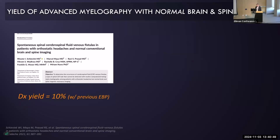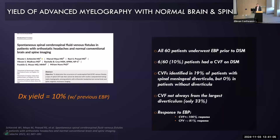Dr. Sheving gave a nice overview of this. A paper from 2021 in Headache found a 10% yield of CSF venous fistulas in patients who had negative brain and spine imaging. All of those patients had undergone epidural blood patch prior to their DSM. In patients who had diverticula, 19% had a venous fistula versus 0% without. The fistula was not always from the largest diverticulum — only about a third of the time. These were patients with very high response to epidural blood patch regardless of fistula status.